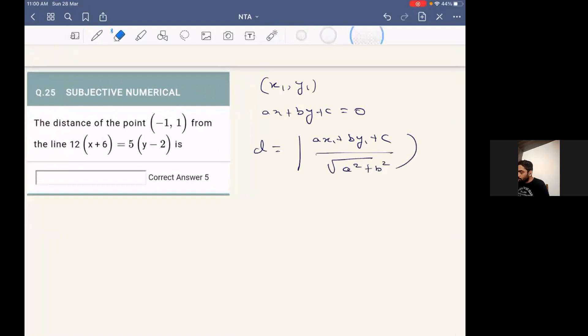So we can apply the formula over here directly. Now the point (x1, y1) is given as (-1, 1). And similarly, we have to just convert the line into the appropriate general form.